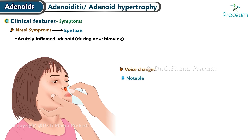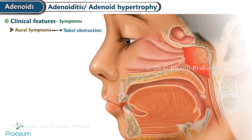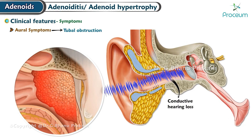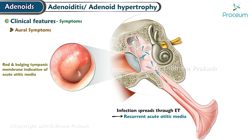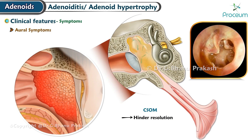Voice changes are notable, characterized by a toneless quality and loss of nasal resonance due to nasal obstruction. Ear symptoms: Tubal obstruction — enlarged adenoids can block the Eustachian tube, resulting in a retracted tympanic membrane and conductive hearing loss. Infection can spread through the Eustachian tube, leading to recurrent episodes of acute otitis media. The presence of infective adenoids may hinder the resolution of chronic suppurative otitis media.